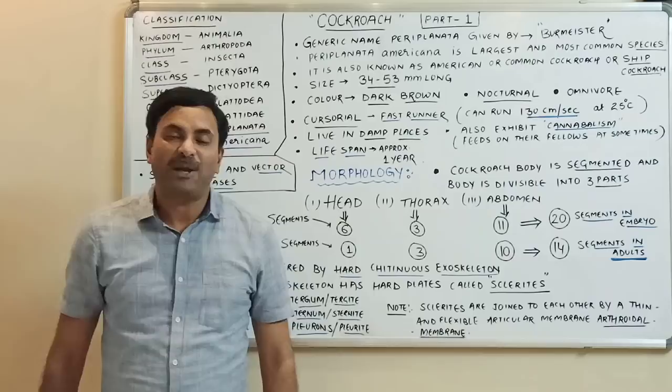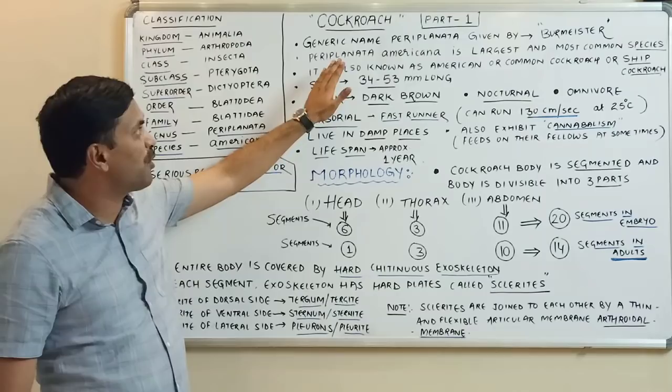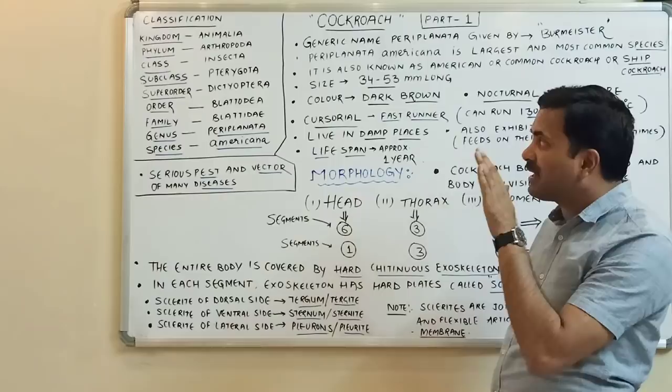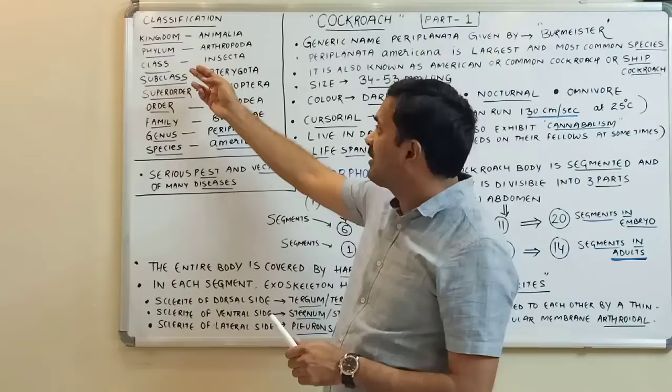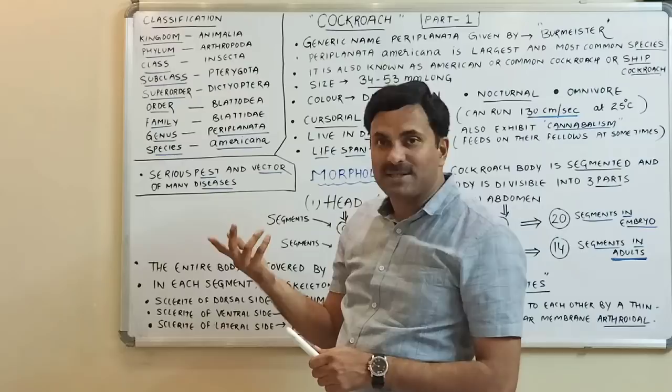Hello to all. Today we are going to study a very important topic — the cockroach. Before studying this topic, you must know its classification. It belongs to the kingdom Animalia and the phylum Arthropoda. Arthropoda means jointed appendages.